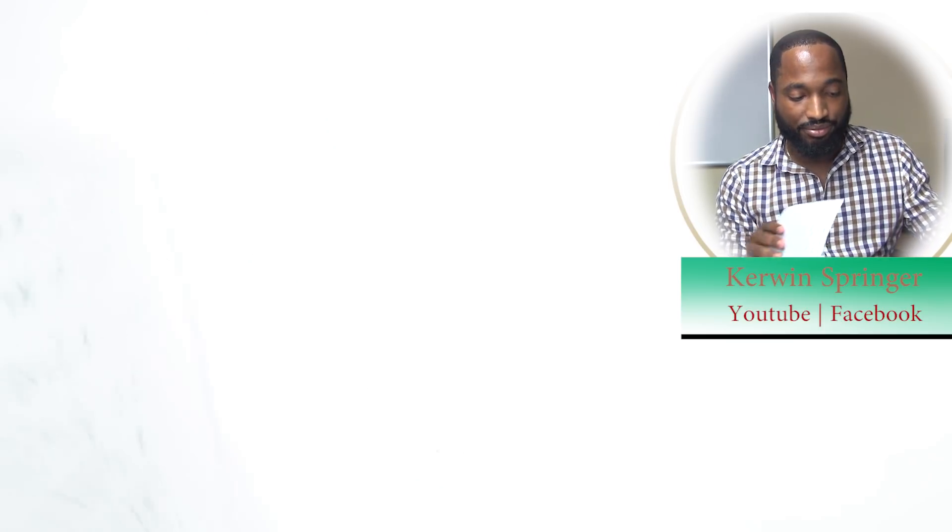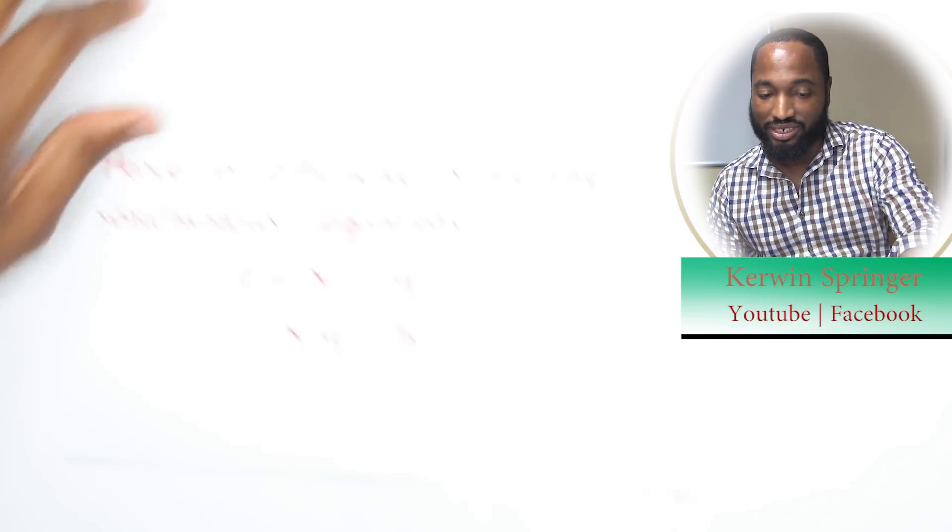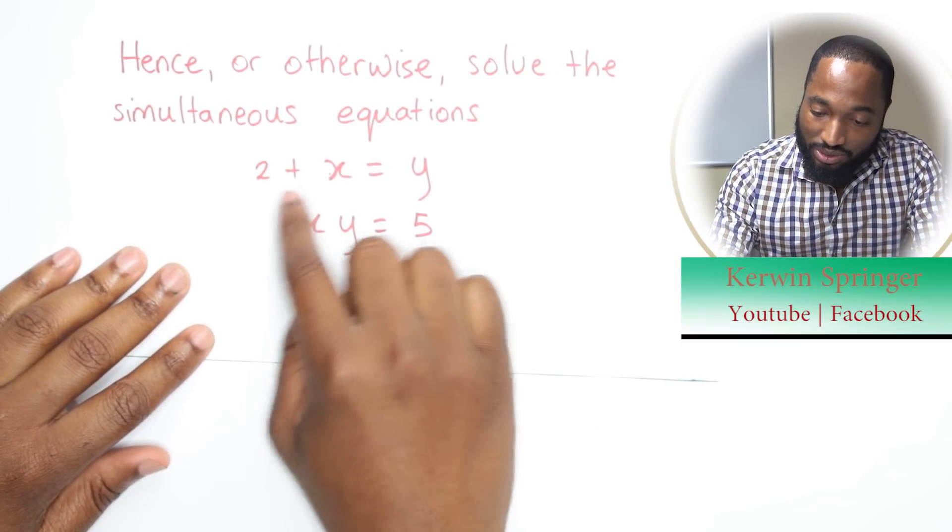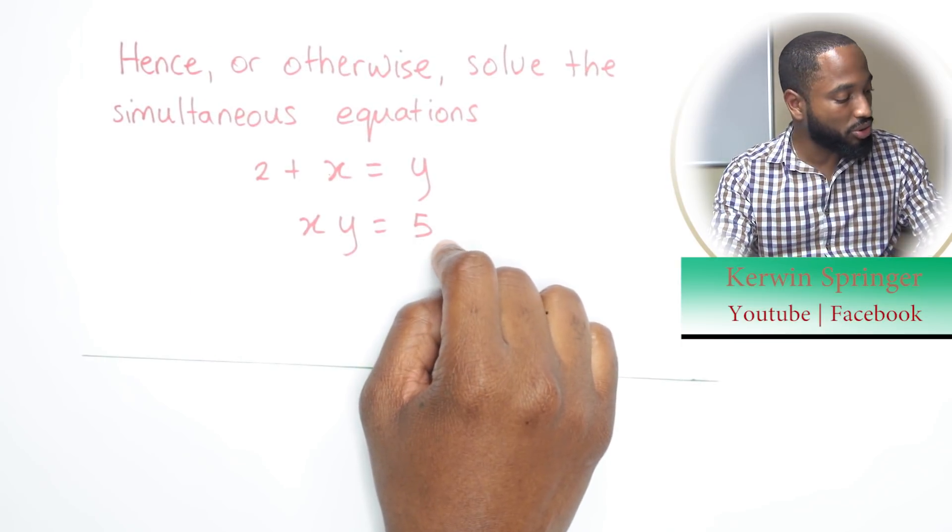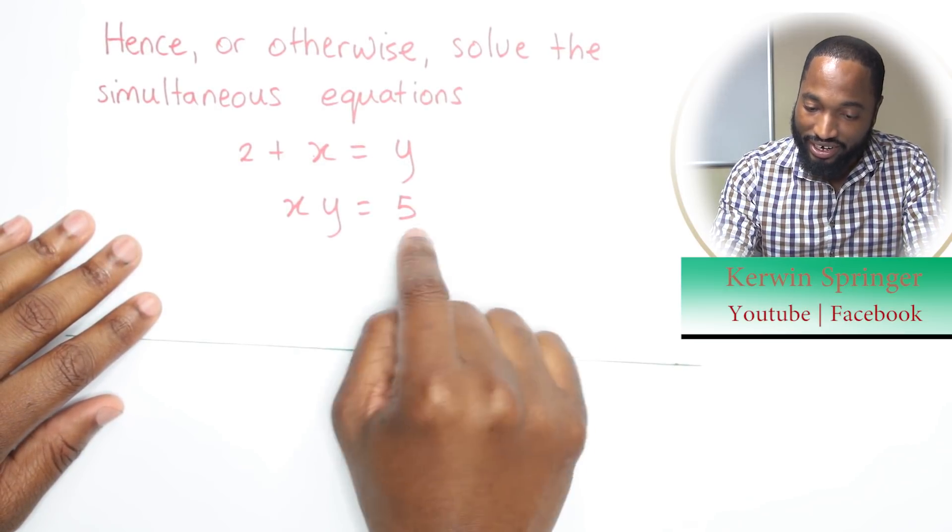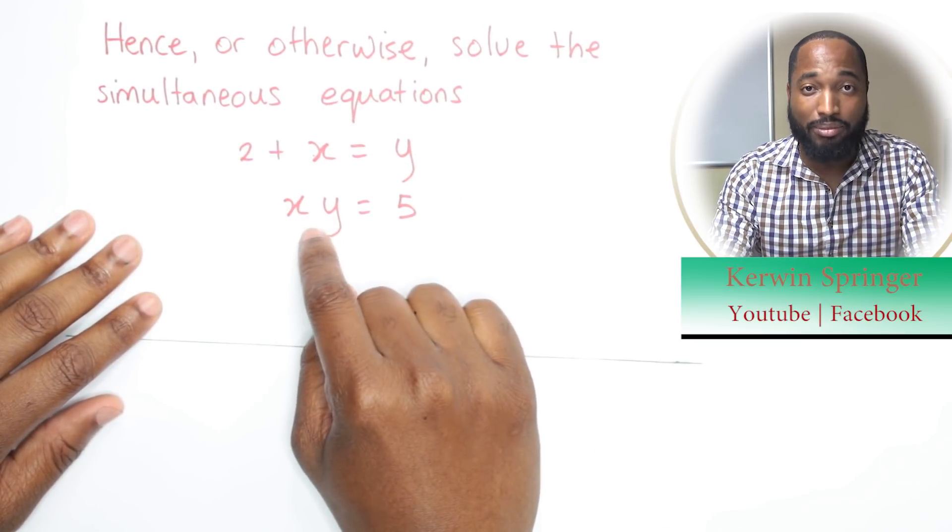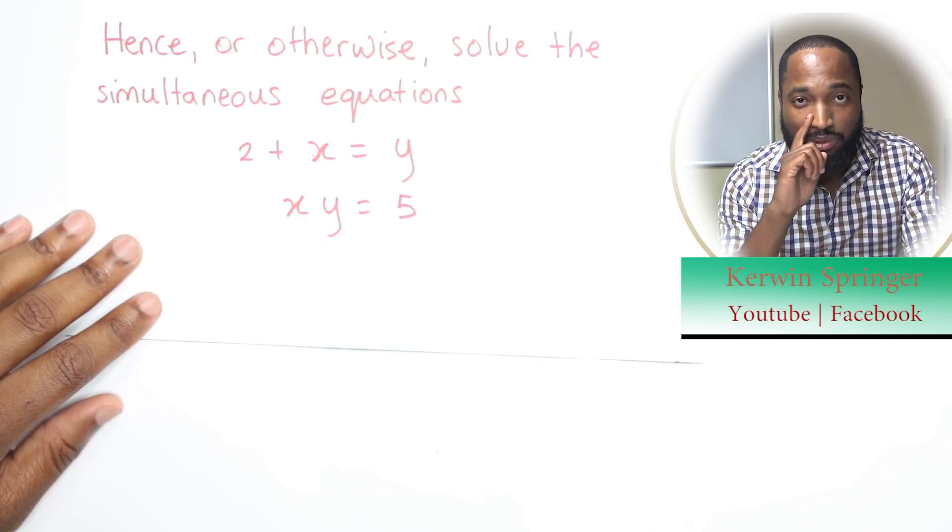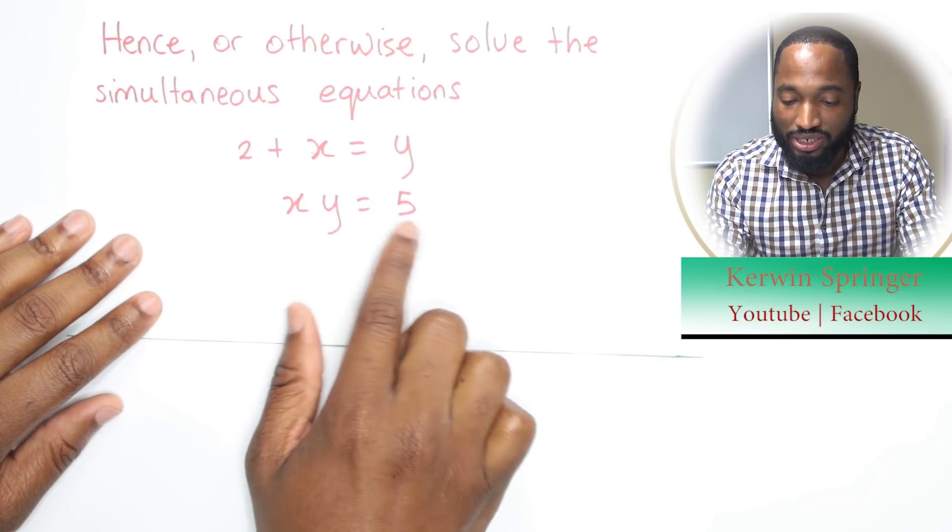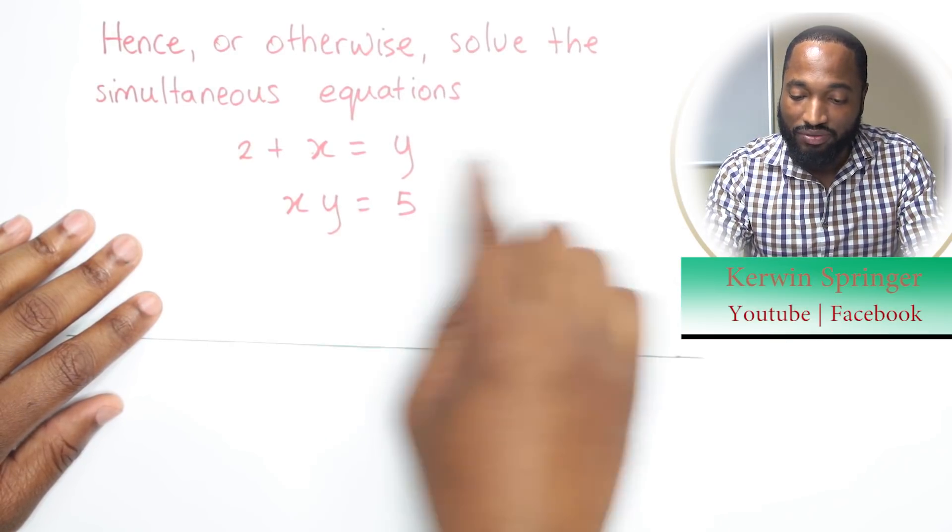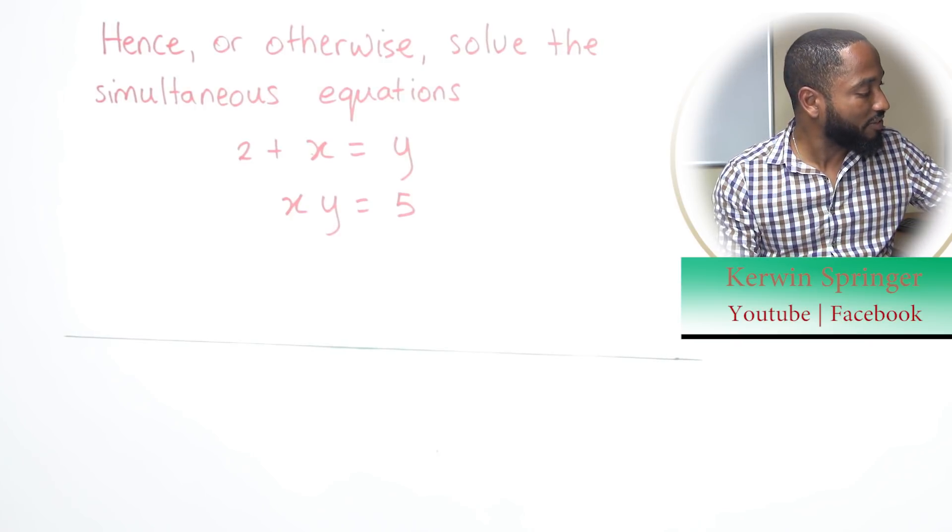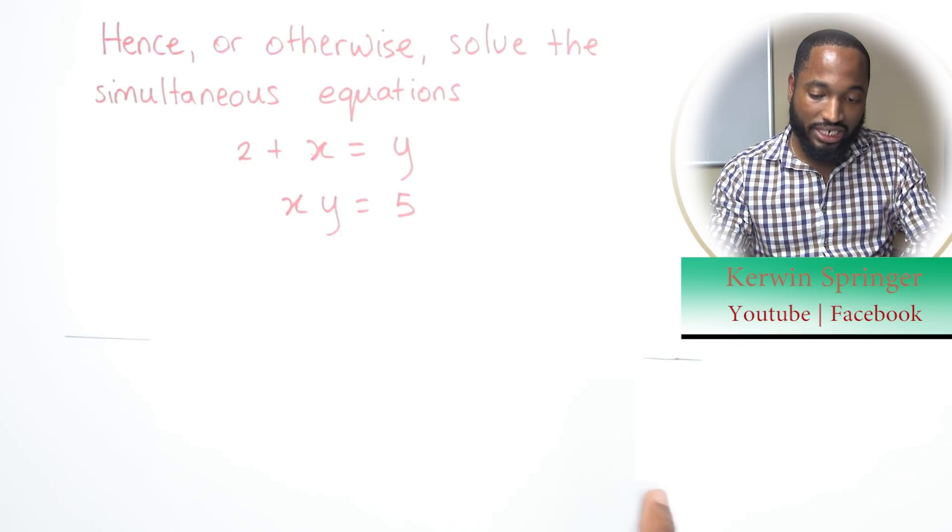The next part of this question asks us, hence or otherwise, solve the simultaneous equations. So you should know that this is linear and this is non-linear because the two variables have been multiplied by each other. They're supposed to be watching you all anymore. The two variables have been multiplied by each other. So this is non-linear. This will form a curve. This will form a straight line. So we can solve that.